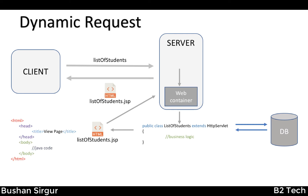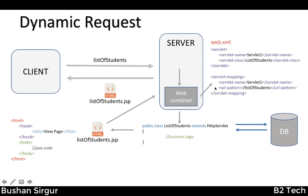The JSP contains both HTML code as well as Java code. On the client side, using Java code, we iterate over the list of students and display the student details in a web page. The question is: how does the web container map the URL to a specific servlet? This is done with the help of web.xml, where we configure which URL maps to which servlet.